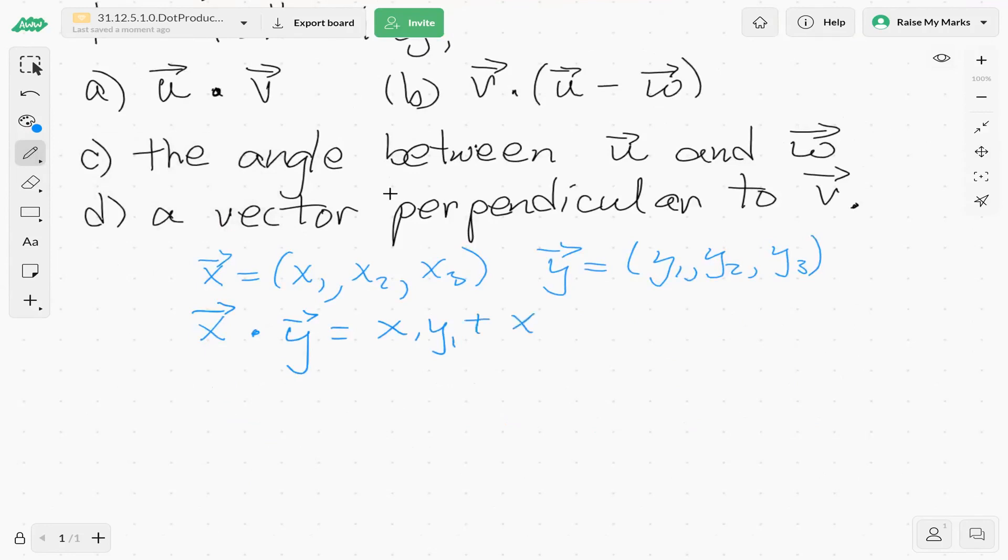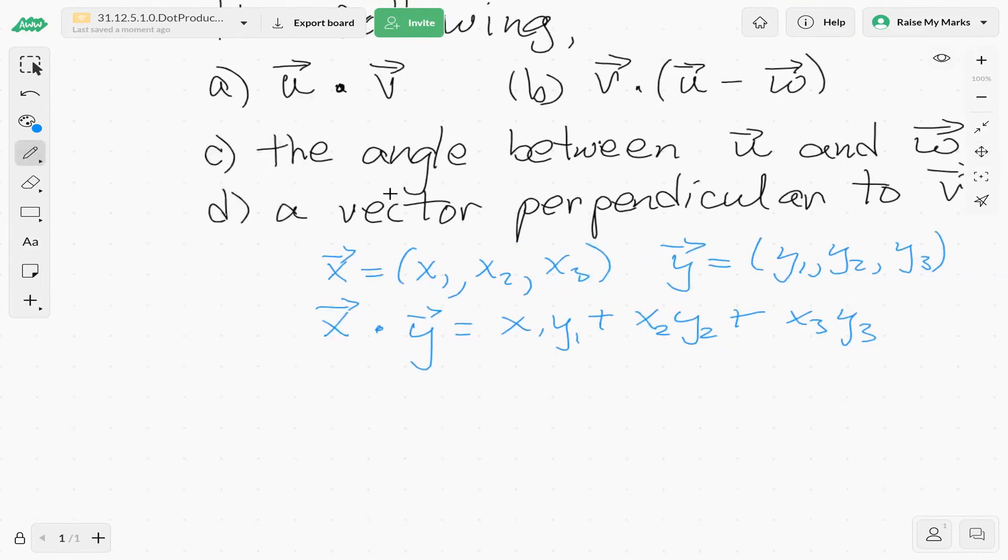The algebraic interpretation or definition of the dot product is we multiply corresponding coordinates and then add them all together. So x1y1 plus x2y2 plus x3y3. That's our dot product. And of course, as we've seen before, we know that the dot product also equals magnitude of x times magnitude of y times the cosine of the angle between the two vectors.